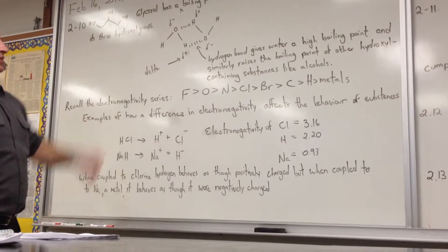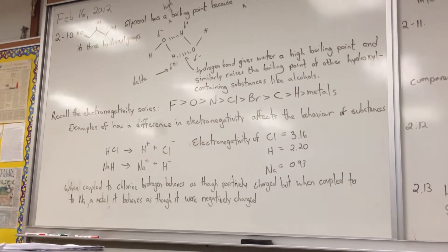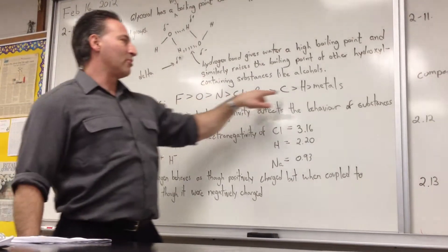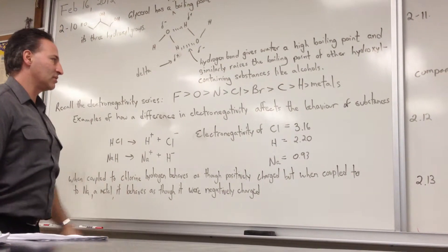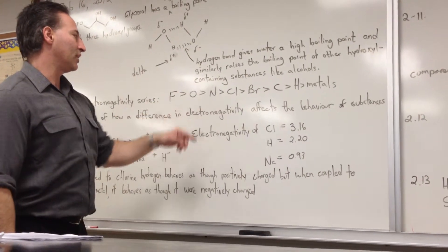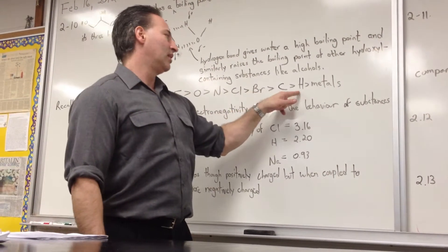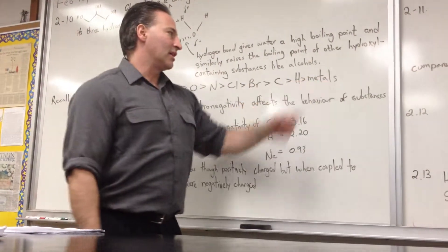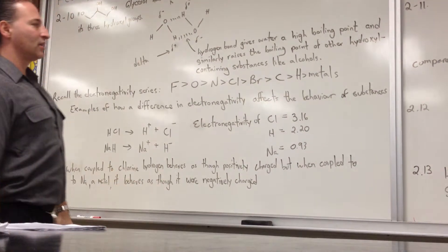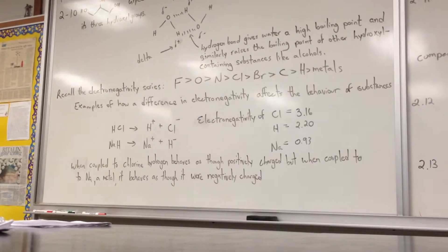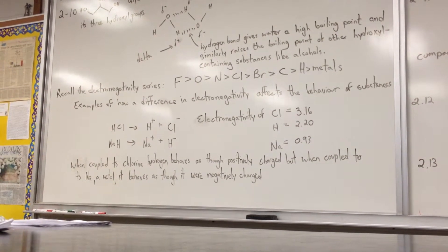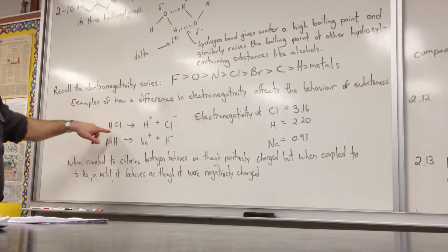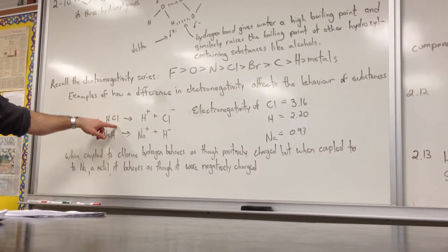This is explained by the difference in electronegativities of the constituent atoms. We recall the electronegativity series. One way to remember the most important elements in the electronegativity series is to make a mnemonic, make a word out of it, FONKEL-BURK-HOFF metals. So most electronegative leads to electronegative. So it helps you make some qualitative observations about bonds, if you remember the electronegativity series. Just for example, when you couple hydrogen to chlorine, to form hydrochloric acid, or hydrogen chloride, the hydrogen behaves like a positively charged atom.